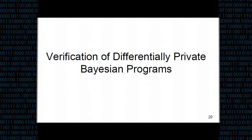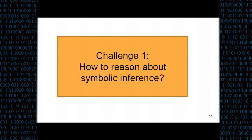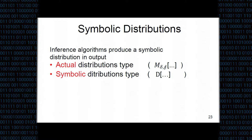We verify differential privacy in Bayesian programs with PREV-INFER, which is based on a type system called ORSQUARE — a relational refinement type system — but which cannot handle Bayesian inference. In PREV-INFER, there were two major challenges. One is how to deal with symbolic inference, which we address by introducing two types: the types of actual distributions, which internalize approximate couplings, and the symbolic distribution types, which represent the output of an inference algorithm.